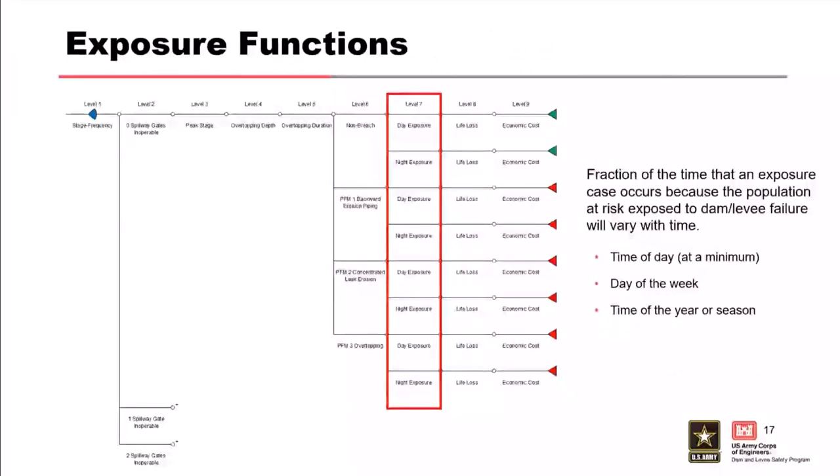Exposure functions represent the fraction of time that a portion of the population at risk is exposed to a dam or levee failure. At a minimum, we consider time of day, since most people are in different places during the day than at night. Other examples include weekdays versus weekends, or time of year—such as a popular camping area with more people in summer, or a ski resort with more people in winter. The number of branches needed depends on how the population at risk changes at different times, days, or seasons.